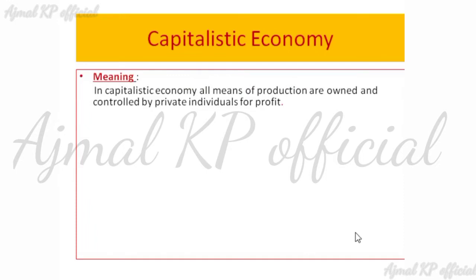The capitalist economy means the economy where all means of production are owned and controlled by private individuals. So after the coming of the industrial revolution, all the means of industries are held by private people. Its features include: no government interference — there will be no control by the government.